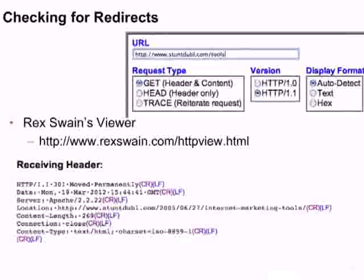In order to check for your different redirects, you're going to want a header checker — that's so you can look at the header of any given web page and see if you get a 200 response code (OK/found) or a 301 moved permanently. For example, www.domain.com might 301 redirect the non-www version. You can see Stuntdouble.com/tools redirects to another URL — anything linking to that URL will be permanently redirected to the final destination URL, preserving that link equity so any links to slash tools will be credited to the longer URL.